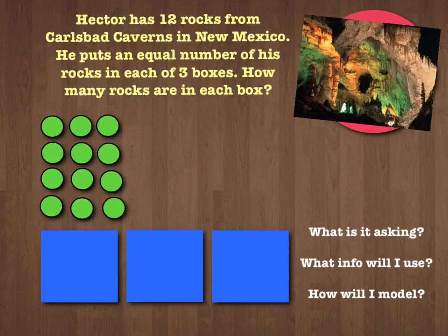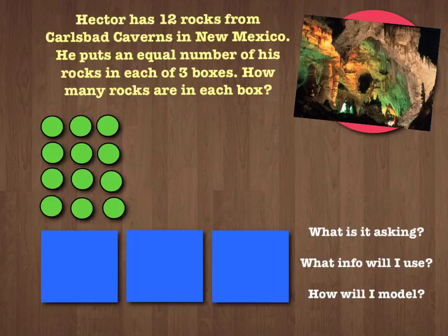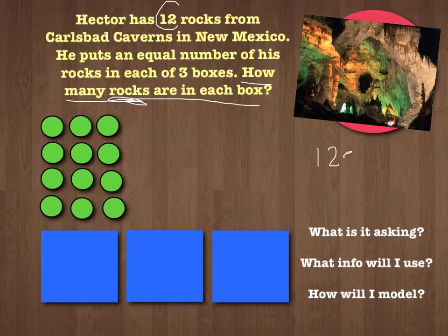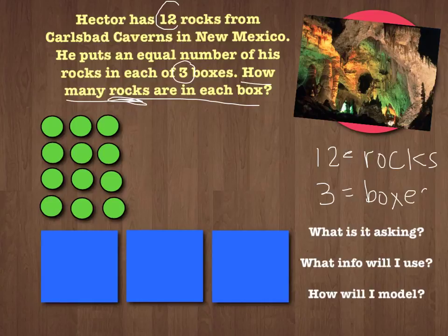So let's look at this first problem. Hector has 12 rocks from Carlsbad Caverns in New Mexico. He puts an equal number of his rocks into each of three boxes. How many rocks are in each box? I gave you a little picture of Carlsbad Caverns because I'm kind of partial to anything from New Mexico. What is the problem asking us to find? It says how many rocks are in each box, so we're going to look for the number of rocks. We have 12, which is equal to the total number of rocks, and we have 3, which is equal to the number of boxes.